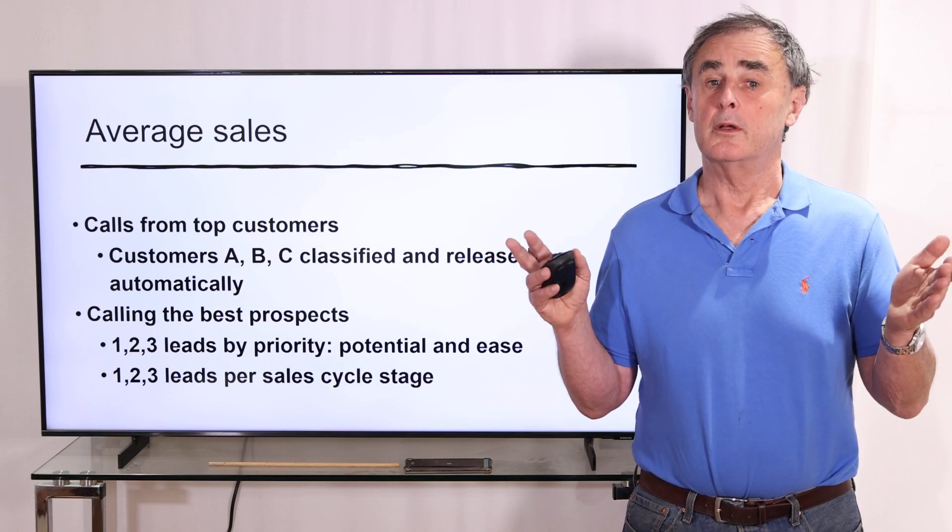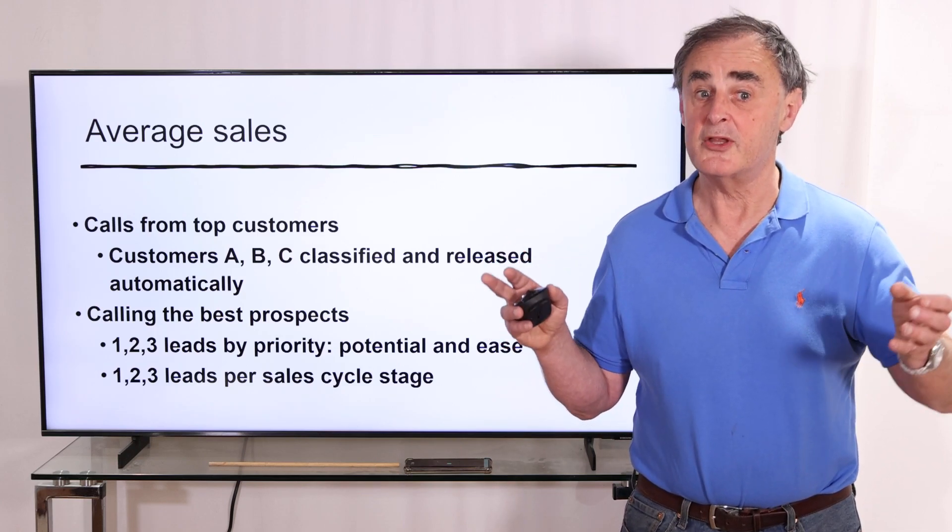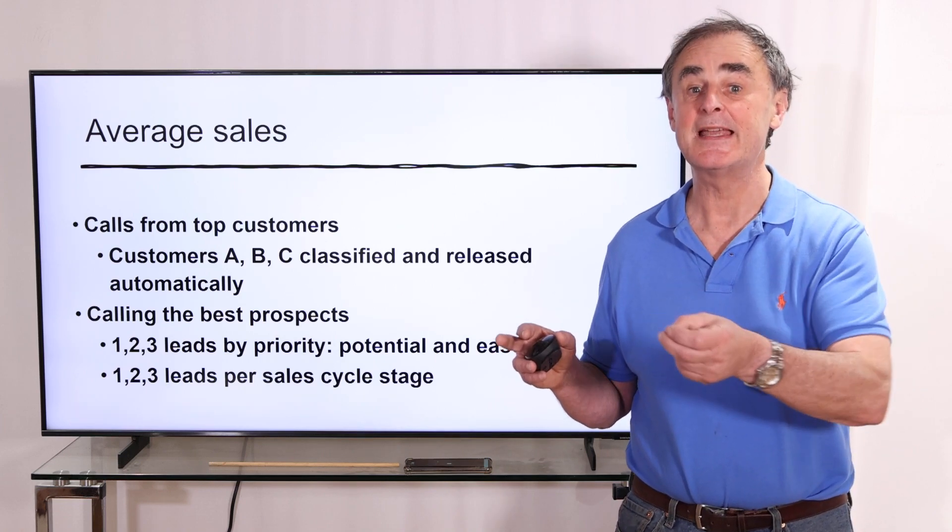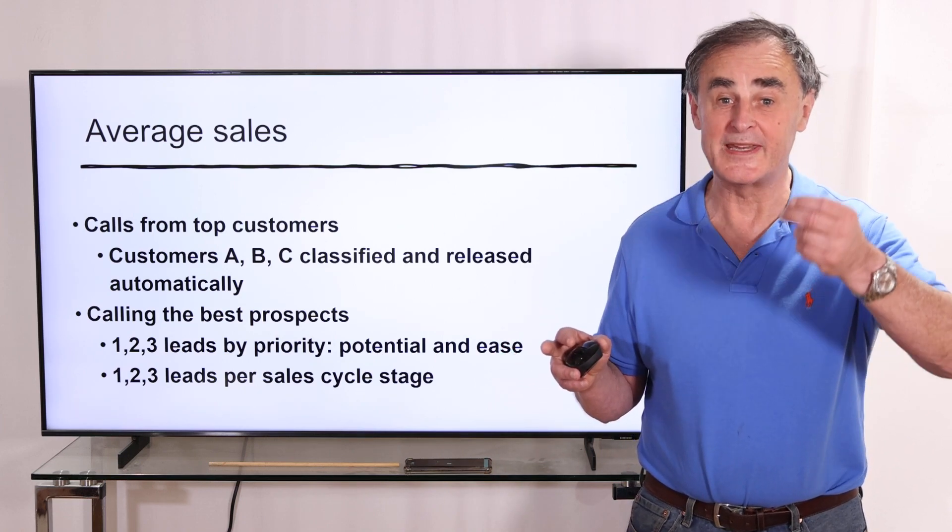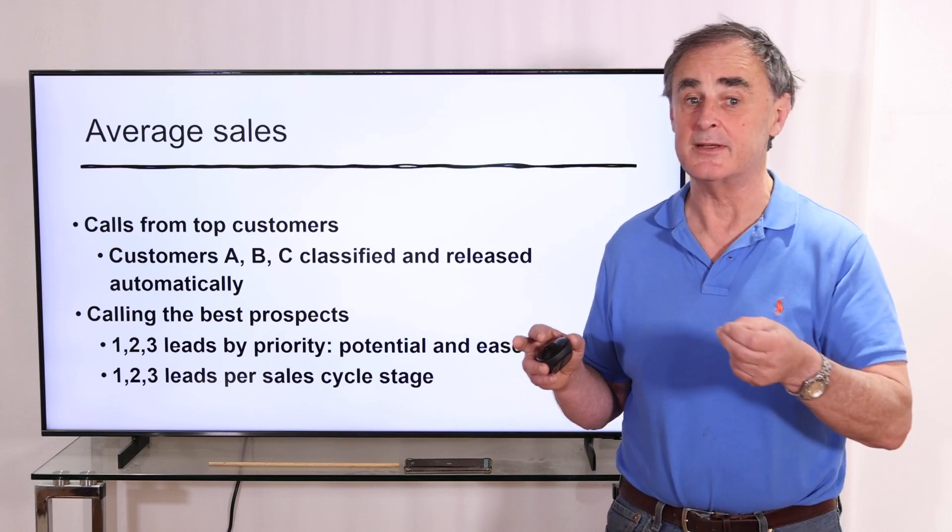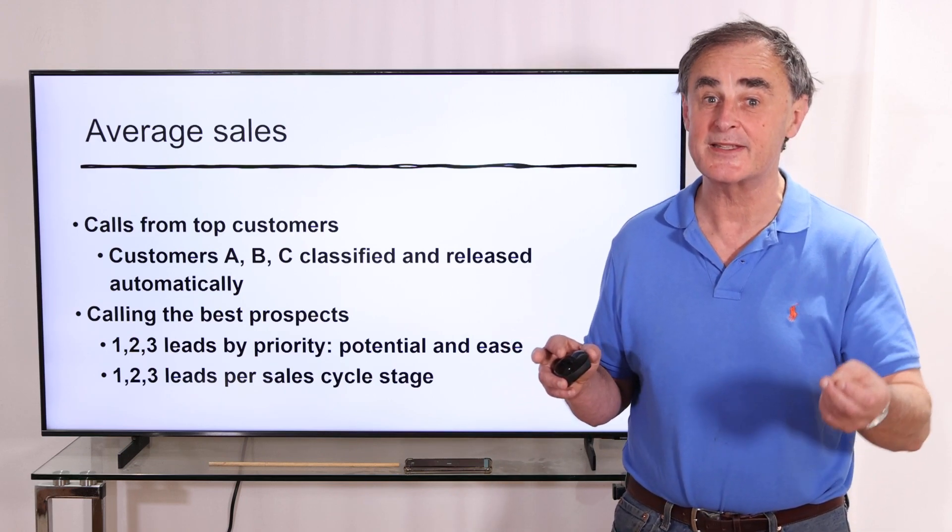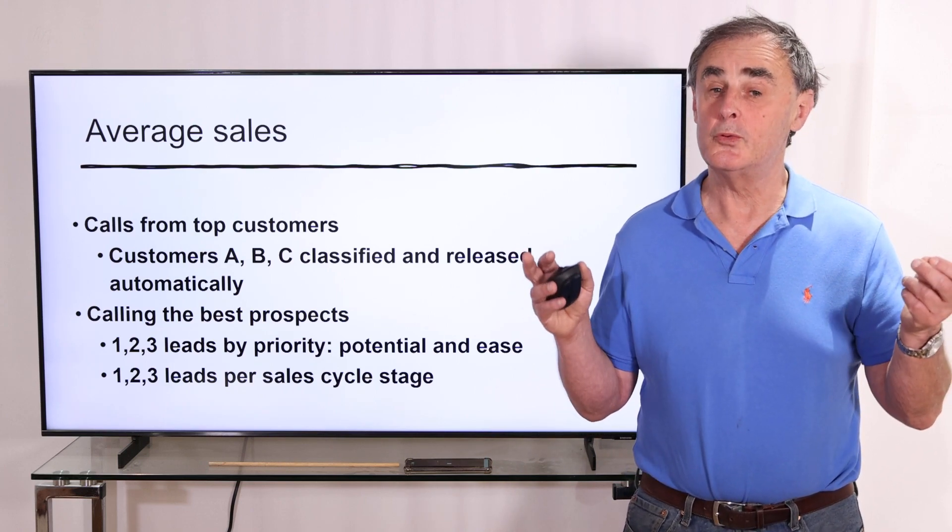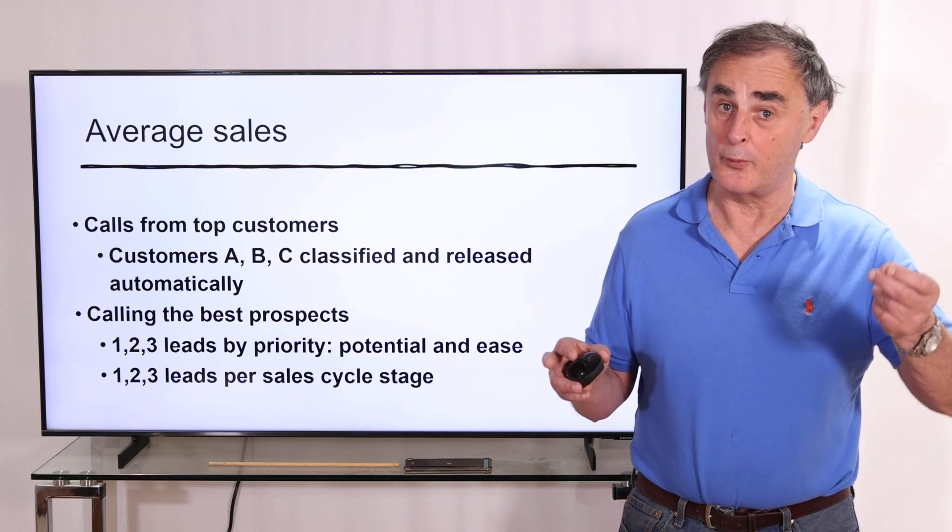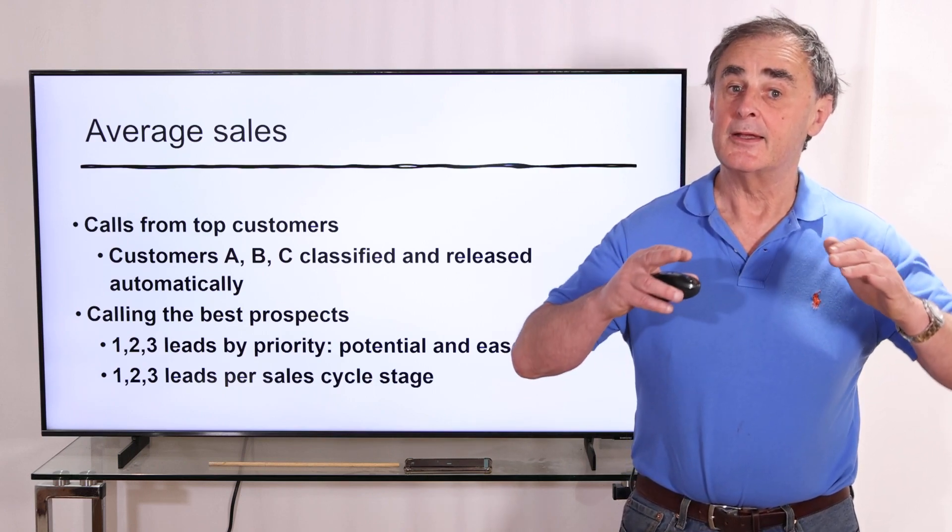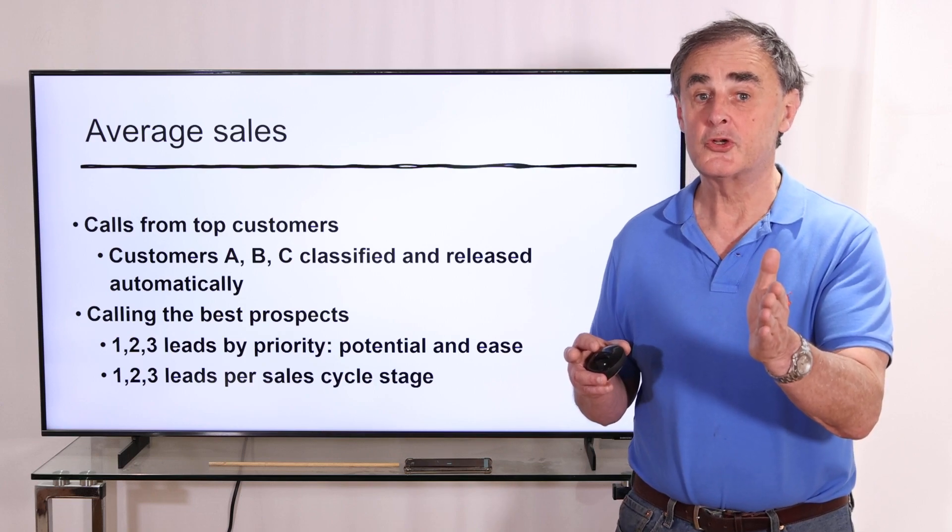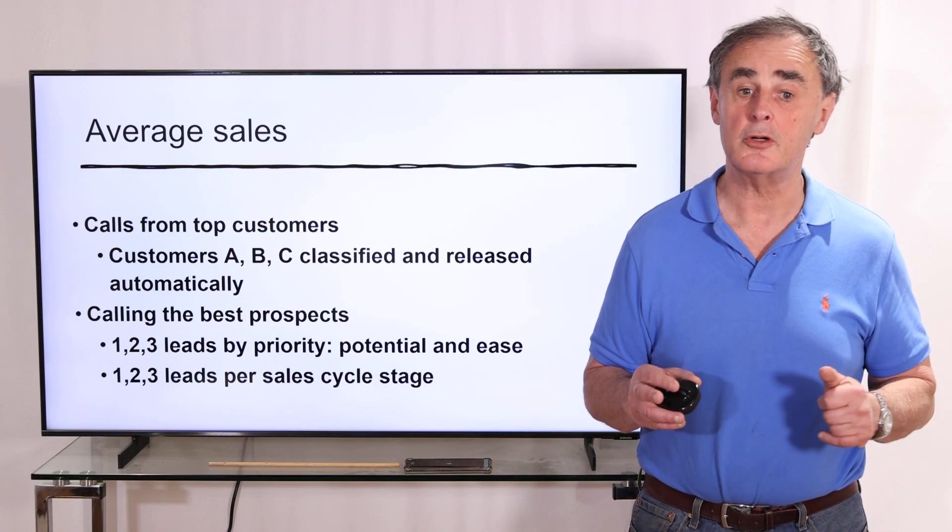This CRM will allow you to categorize and prioritize your customers A, B, and C, and call the A's, then the B's, then the C's. You'll be able to prioritize easily and quickly. Same for prospects - you can categorize them one, two, or three. One would be the ones with a lot of potential, two with less potential, three with even less potential.